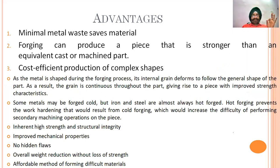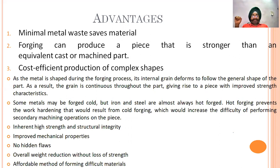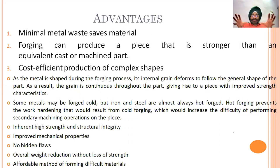The first advantage is minimal metal waste — it saves material. Approximately 90% of the material is used and only 10% is wasted. The second advantage is that forging can produce a piece that is stronger than an equivalent cast or machined part, because when the metal is worked, the grains align in a direction making the whole part strong. Third is cost-efficient production of complex shapes.